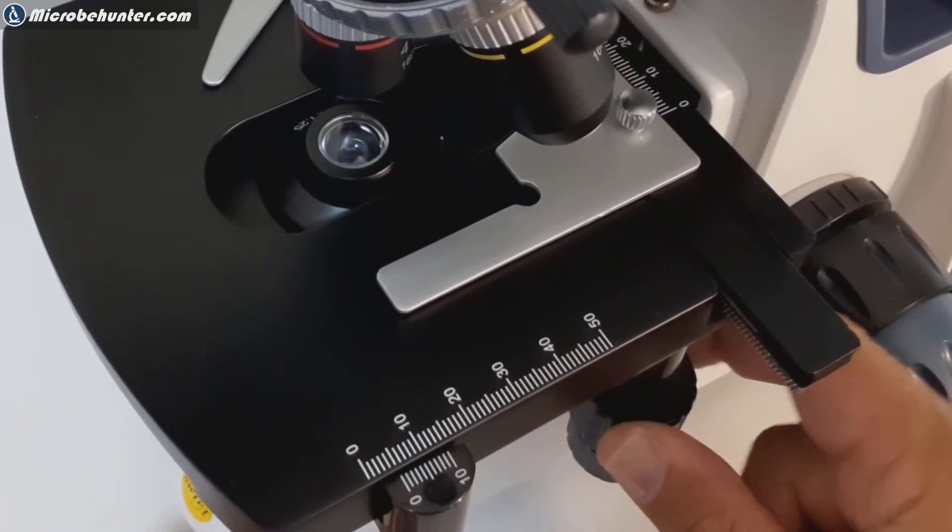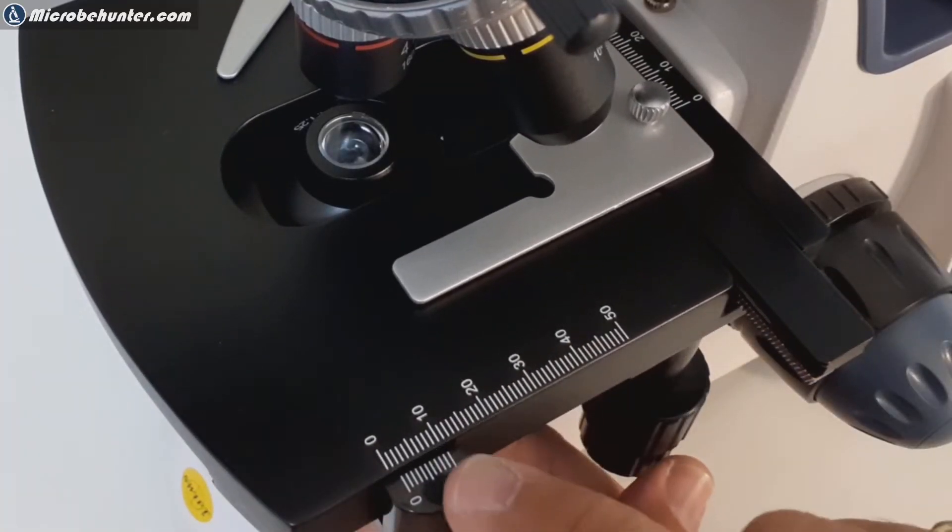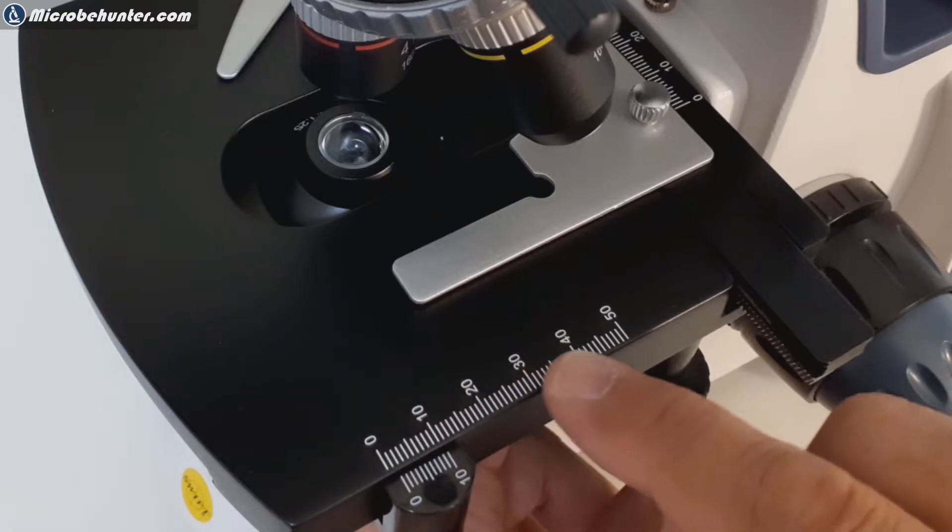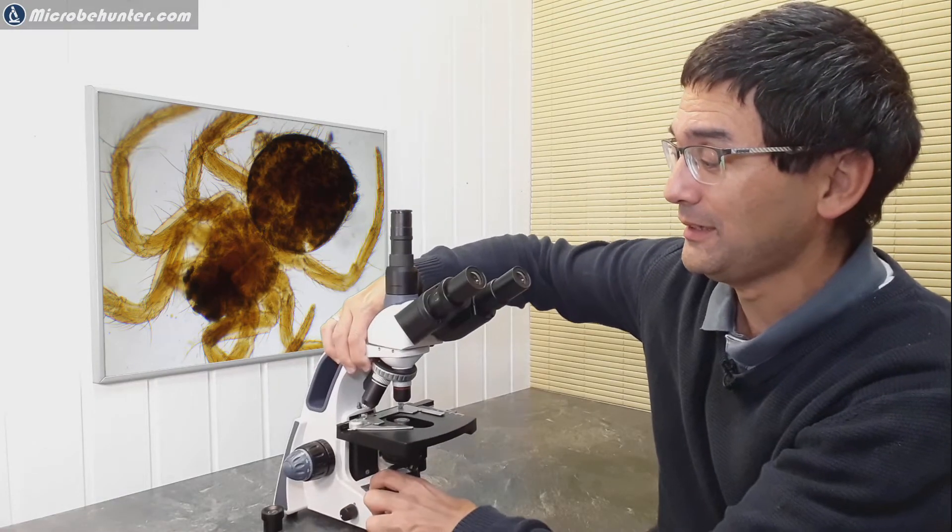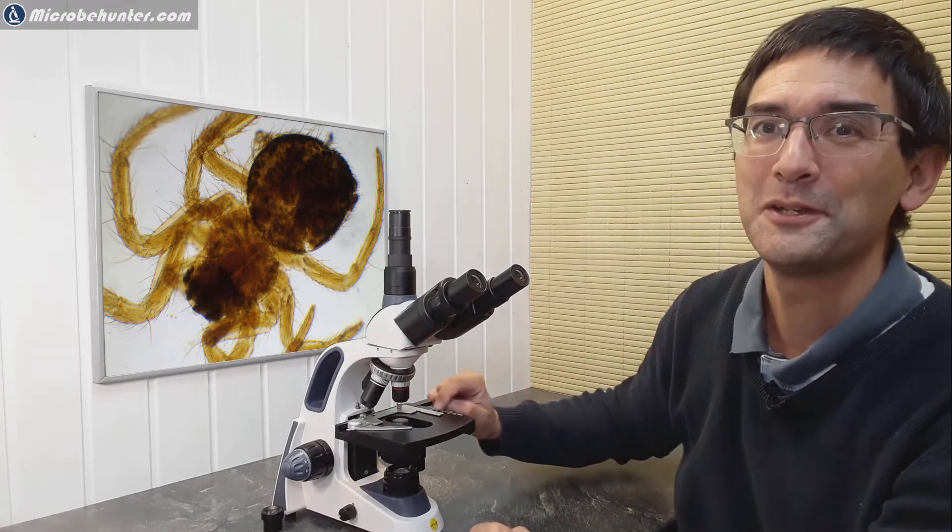In the mechanical stage micrometer here, they printed it the wrong way because normally when I use the microscope at least, I always use it like this so that the stage is accessible to me, but then the numbers here are upside down.